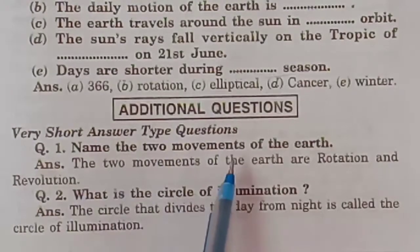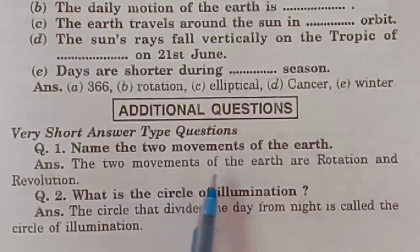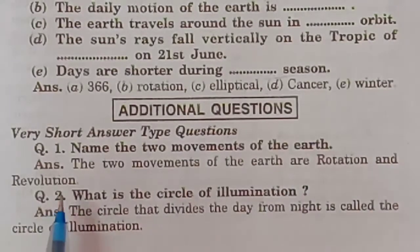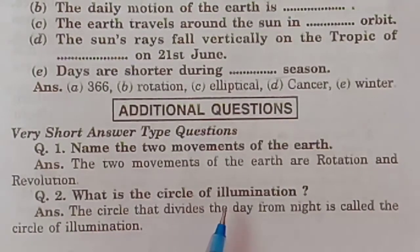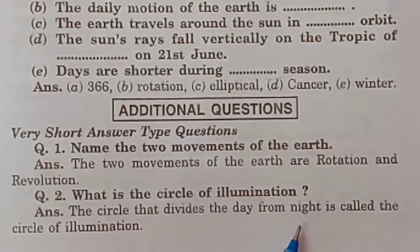Name the two motions of the Earth. The two motions of the Earth are rotation and revolution. What is the circle of illumination? The circle that divides the day from night is called the circle of illumination.